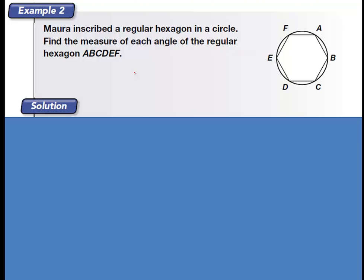So Mara inscribes the regular hexagon in a circle. Find the measure of each angle of this regular hexagon. All right, so what are you going to do first? That's right, you've got to pick an angle. I don't care which one. I'm just going to use A, and then you're going to draw in your diagonals. There's one, two, three diagonals. And three diagonals is going to give us how many triangles? It gives us one, two, three, four triangles. So we take four times 180, and that's going to equal 720 degrees.